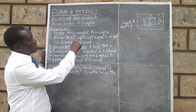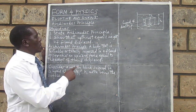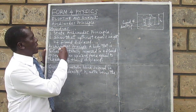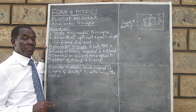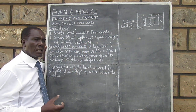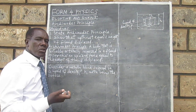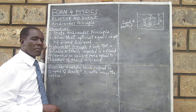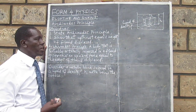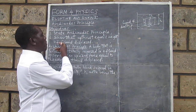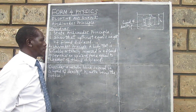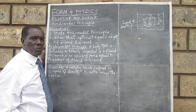The objectives for our lesson today are two. Number one, we are going to state Archimedes' Principle. And number two, we are going to show that when a body is partially or totally immersed in a fluid, it experiences an upward force equal to the weight of the fluid displaced. And that is actually Archimedes' Principle.